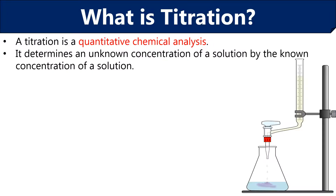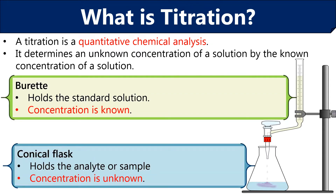First, we will discuss what is titration and what we require to perform the titration. Titration is a quantitative chemical analysis because in this we can measure the unknown concentration of the sample by the known concentration of a solution. Titration is also called titrimetry and it is a type of volumetric analysis that includes volume measurements. To perform the titration, we generally require a burette and a conical flask.